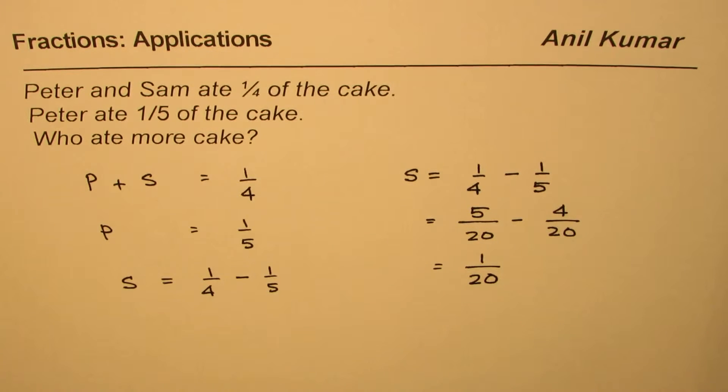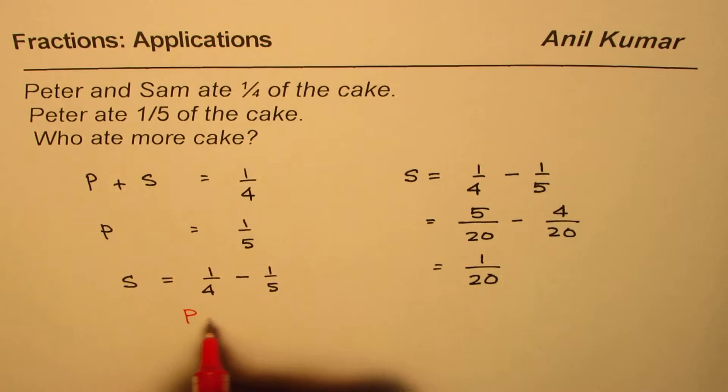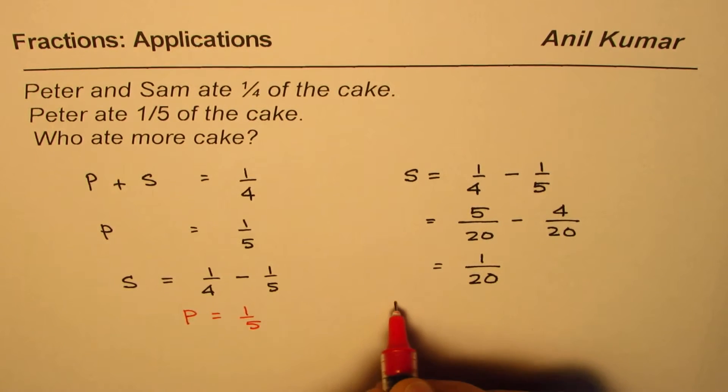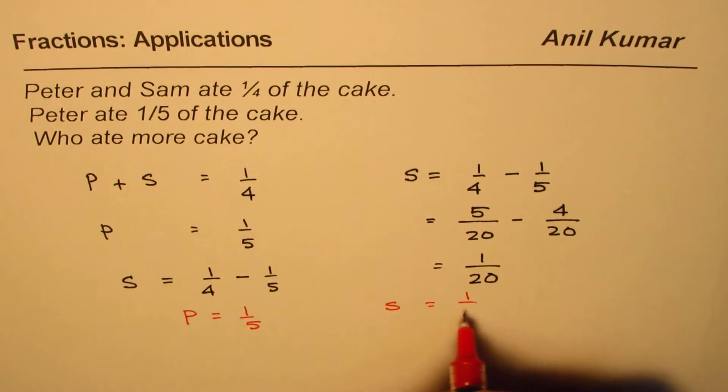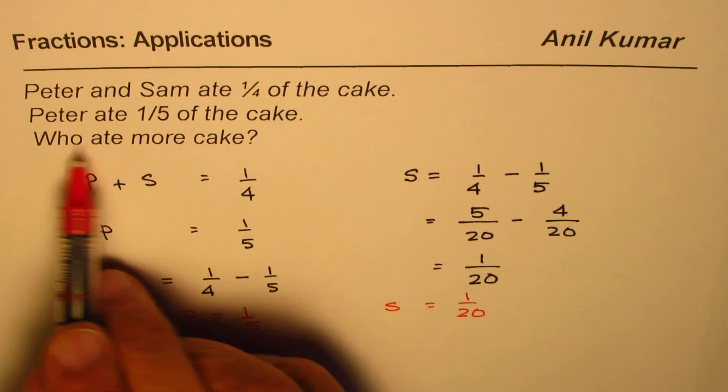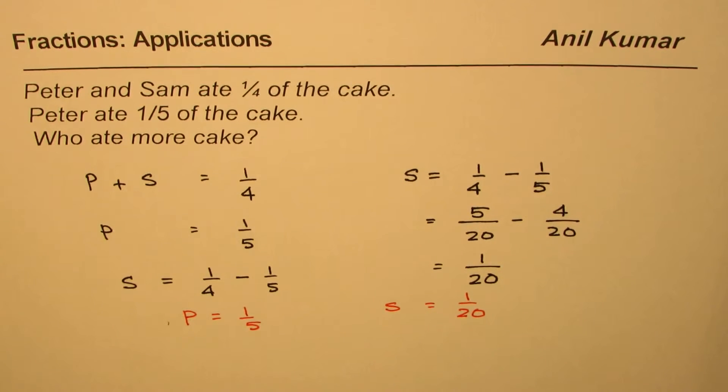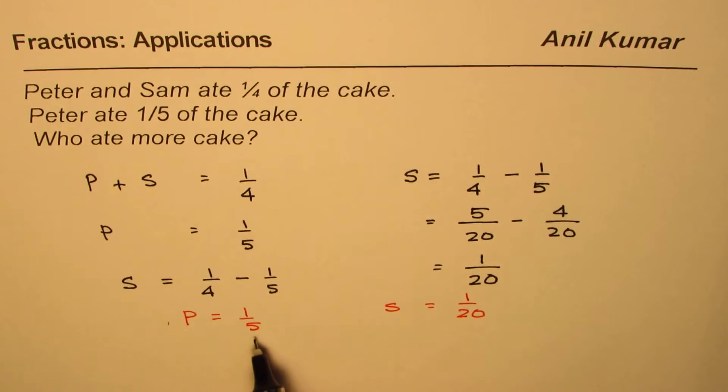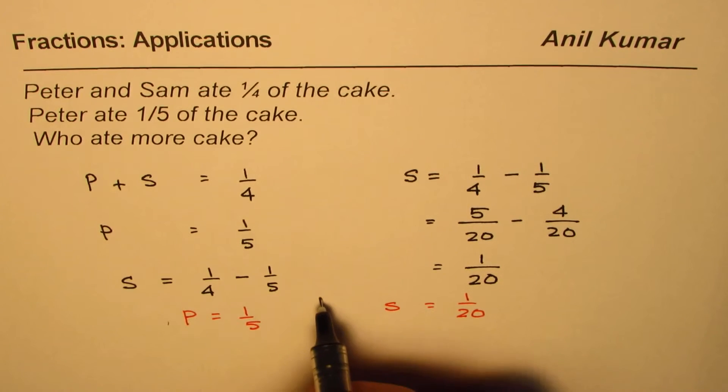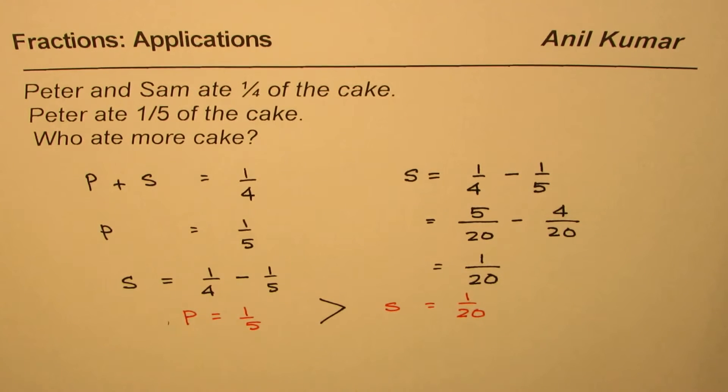5 minus 4 is 1. So, Sam ate one-over-20 part. So, what we have here is that Peter ate one-fifth, Sam ate one-over-20. Who ate more? Of course, one out of five is more than one out of 20. So, Peter ate more, right?